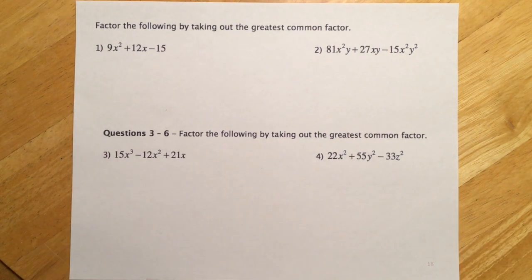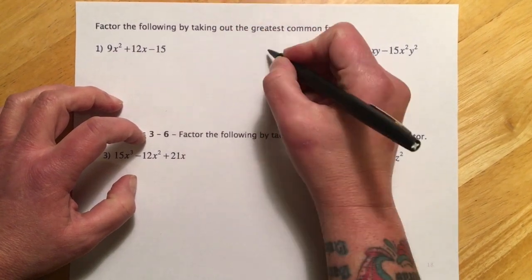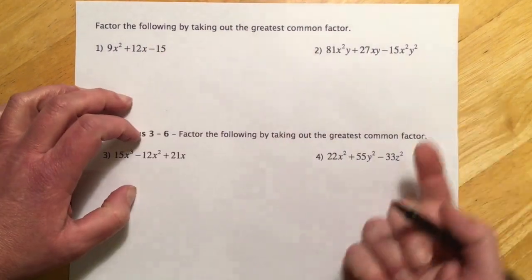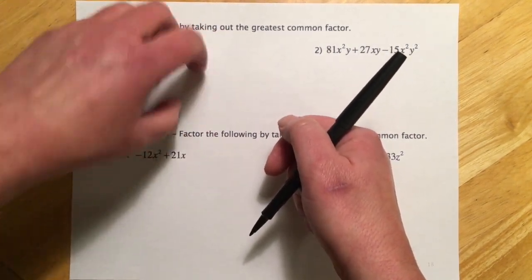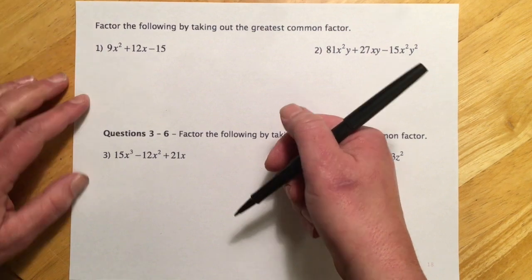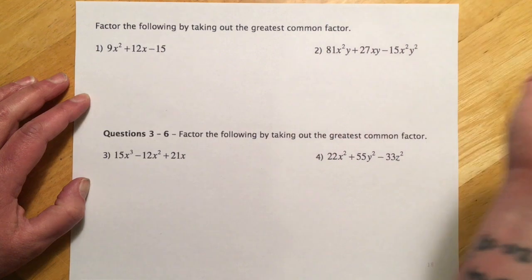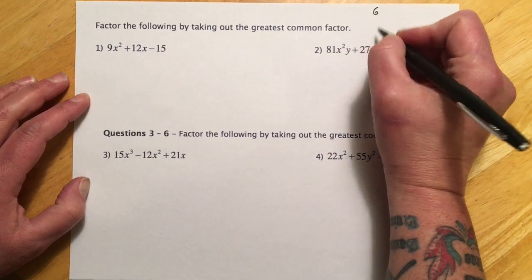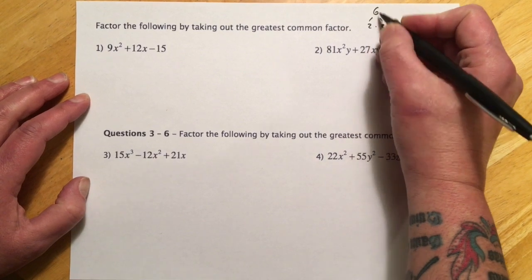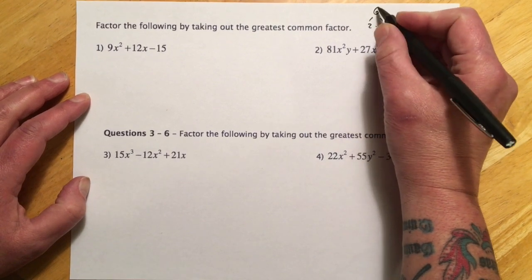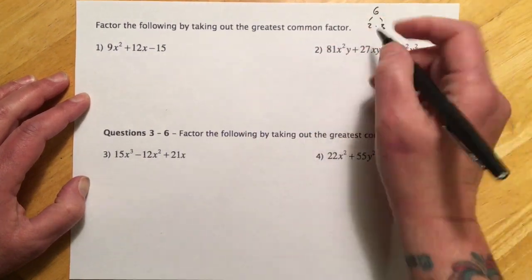The first part is something called greatest common factor. Last section we did the distributive property where we had something outside parentheses and ran it through when multiplying. Greatest common factor is like reverse distribute — we're trying to figure out the biggest thing we could take out front of the parentheses. For instance, if you factor six, it's two times three. Two times three is the multiply, and breaking the six down is the factoring.